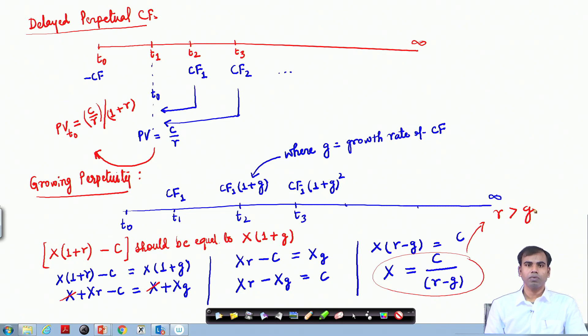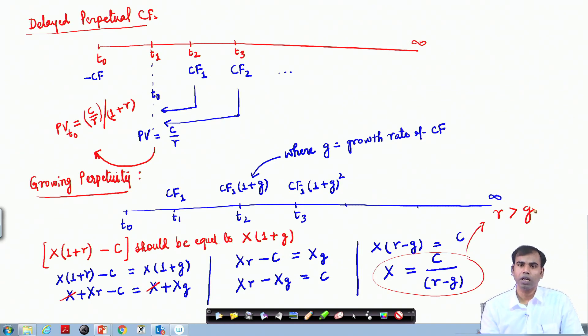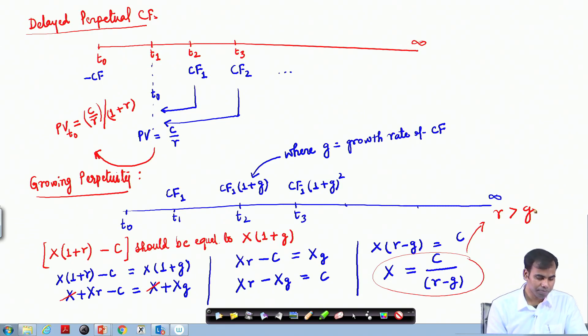The basic assumption of the growing perpetuity approach is that the growth rate should be less than the rate of discounting, which is given by R should always be greater than G.